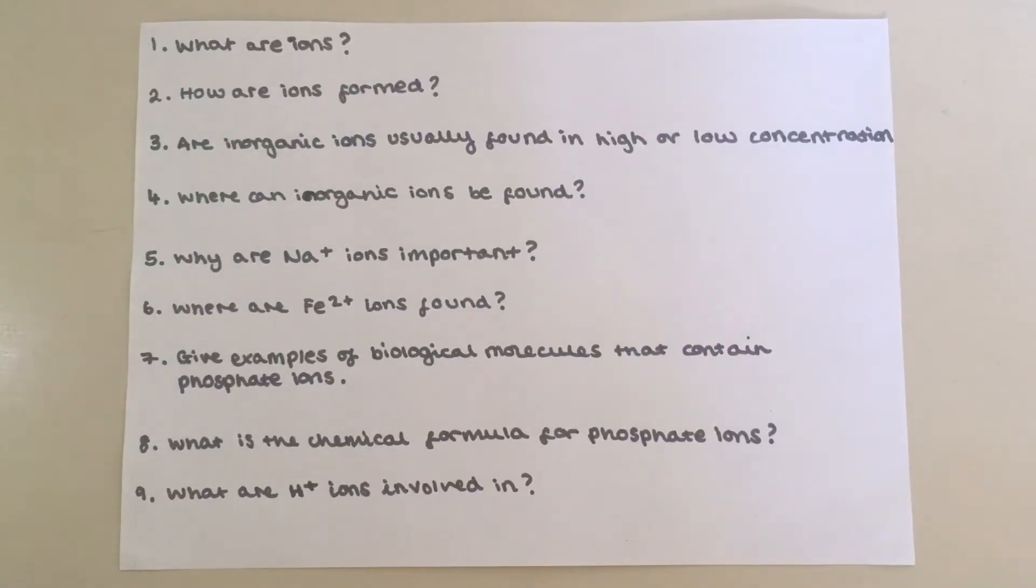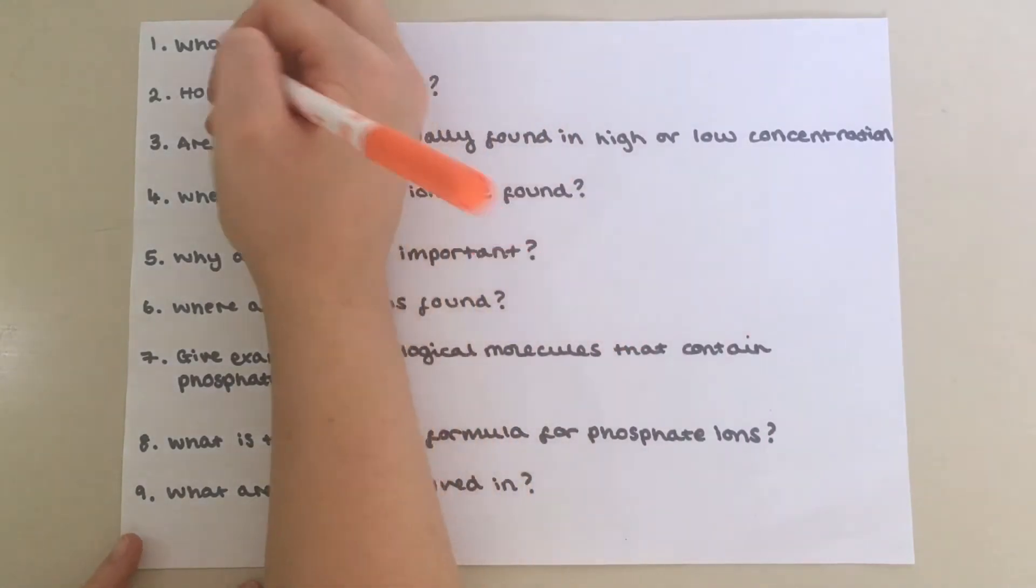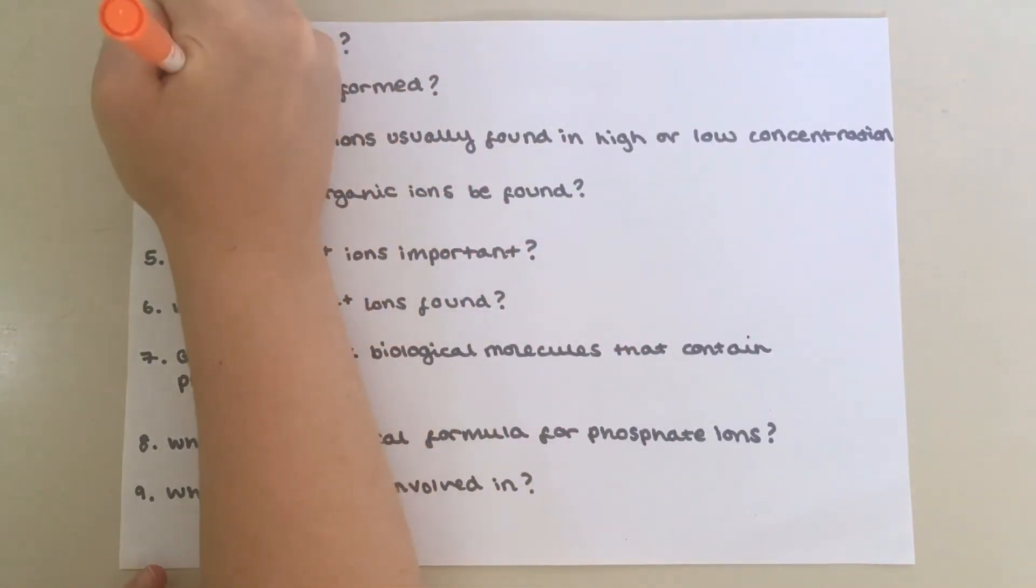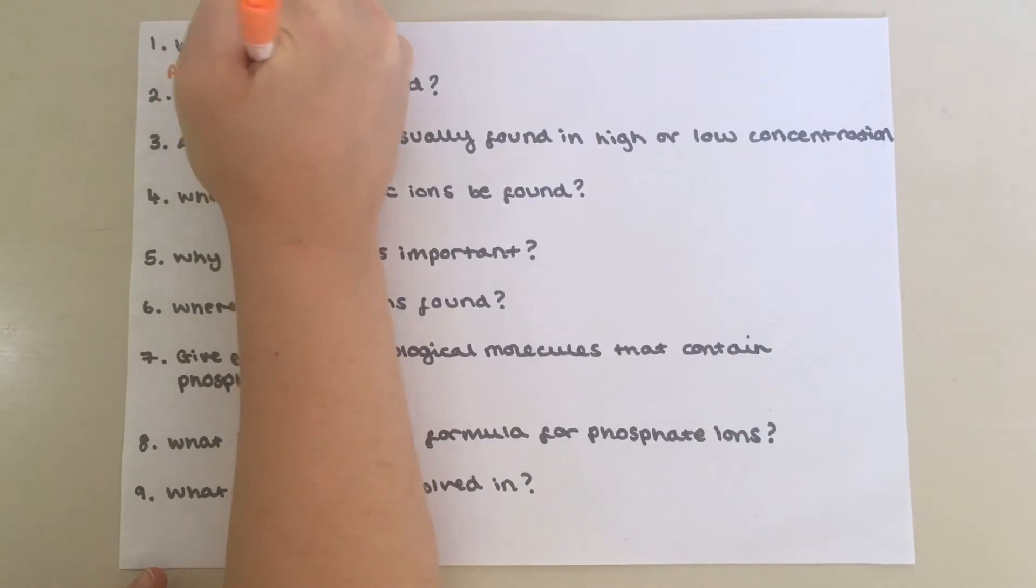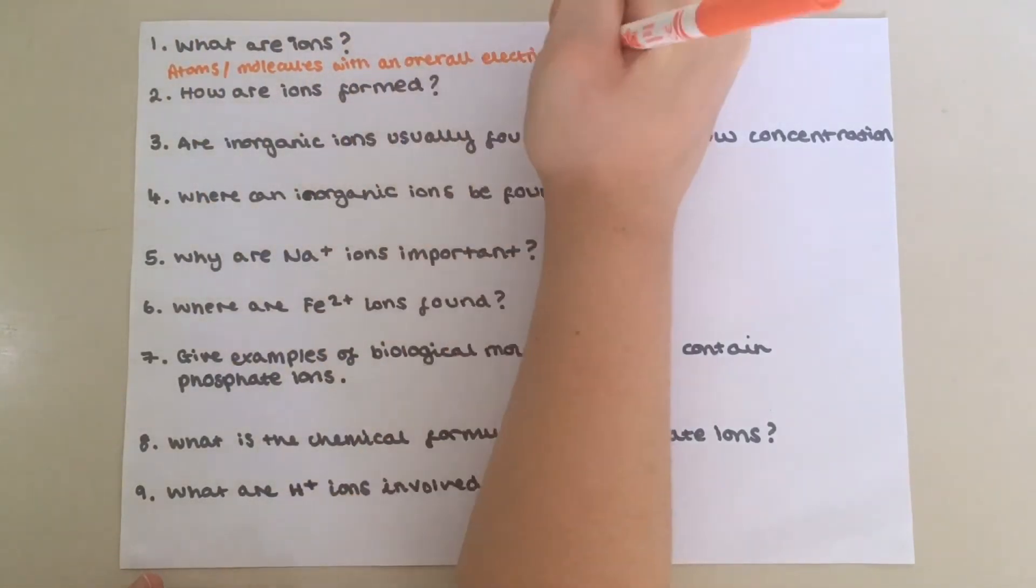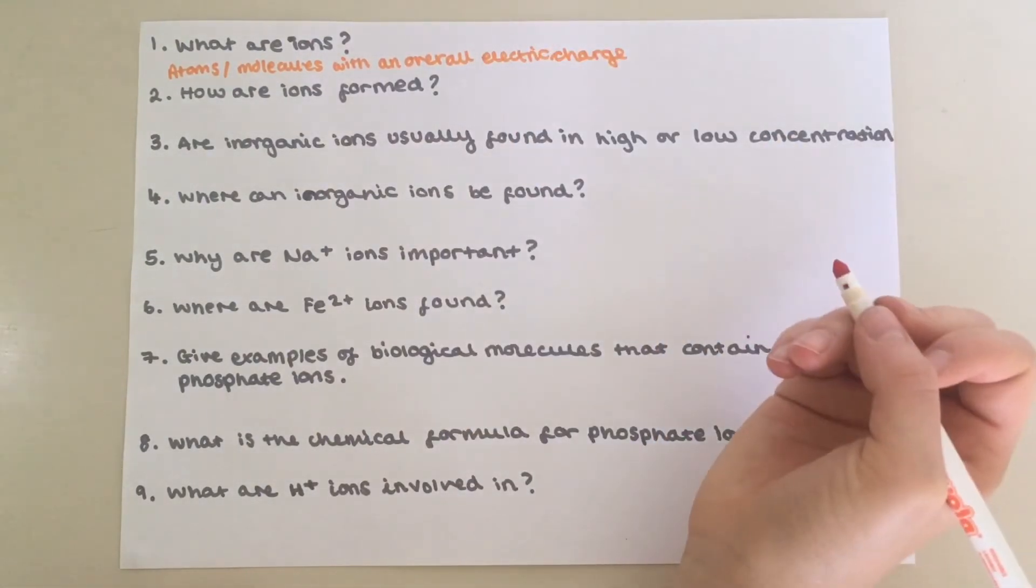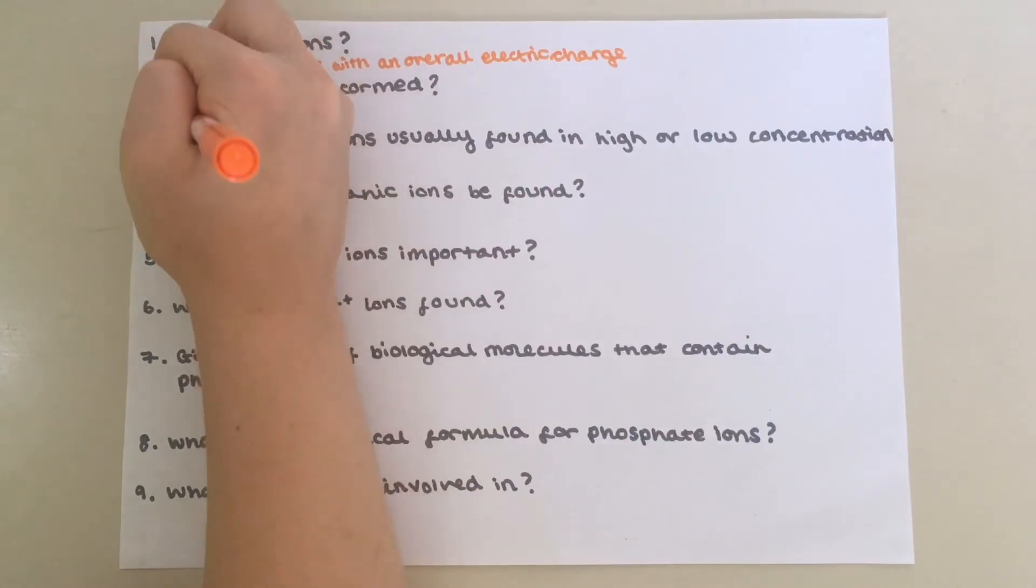Now have a go at some of these questions. Question one, what are ions? Ions are atoms or molecules with an overall electric charge. Two, how are ions formed? By the transfer of electrons.